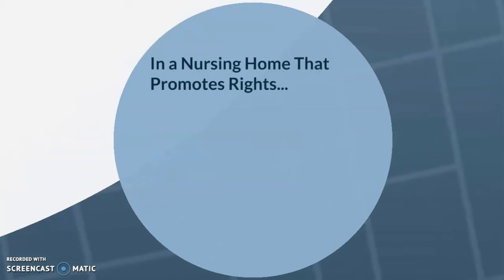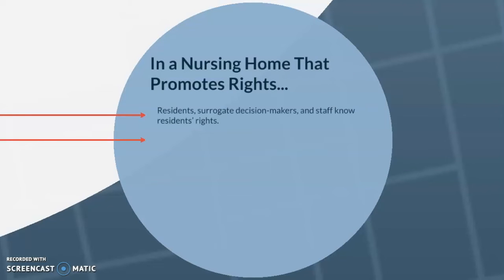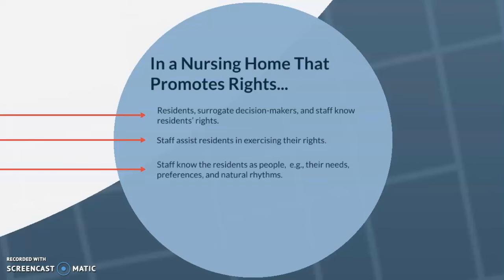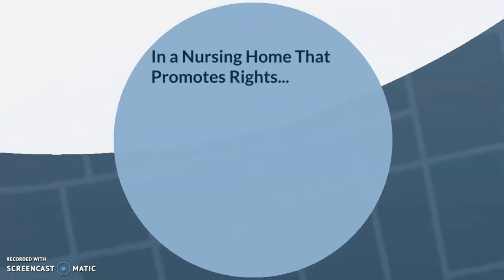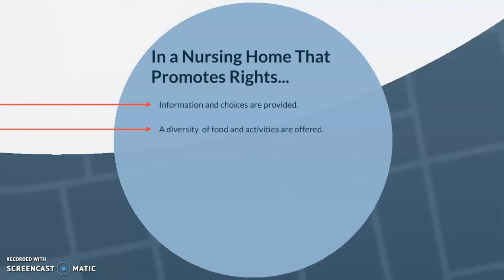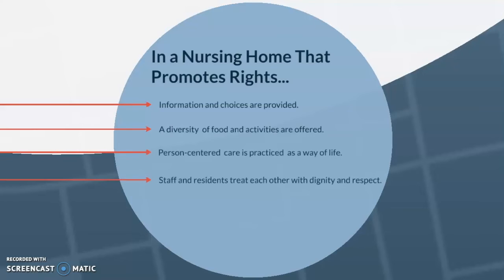In a nursing home that promotes rights, residents, surrogate decision makers, and staff know residents' rights and assist residents in exercising them. Staff know residents as people, understanding their needs, preferences, and natural rhythms, and offer alternative ways to communicate when needed. A nursing home that promotes rights will offer information and choices, have a diversity of food and activities, practice person-centered care, and treat people with dignity and respect. In such a nursing home, residents and staff are happier.